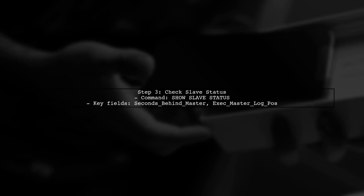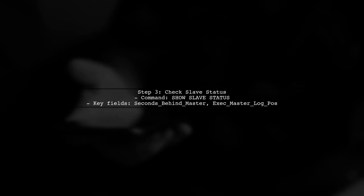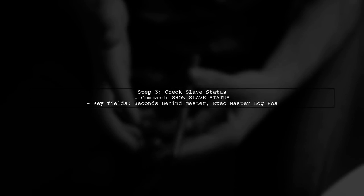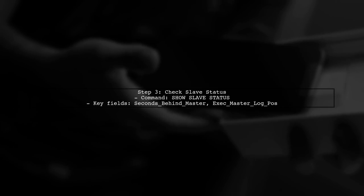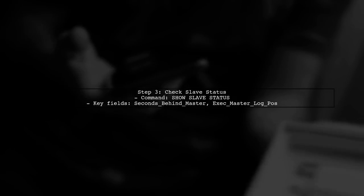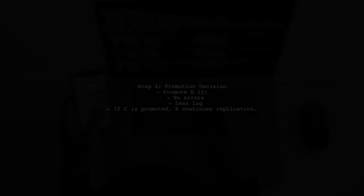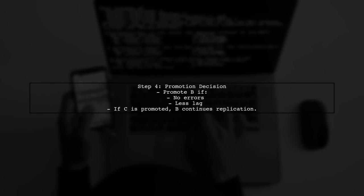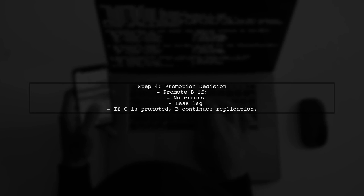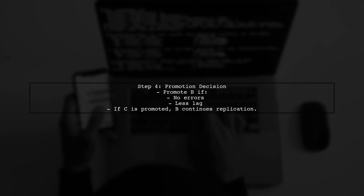To determine which slave to promote, you can use the command Show Slave Status on both slaves. This will provide information on the replication state and the last executed transaction. If B is ahead in terms of data and has no replication errors, it is the best candidate for promotion. If you promote C instead, B will not truncate its data — it will continue to replicate from C.